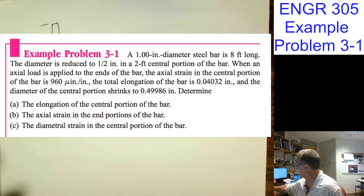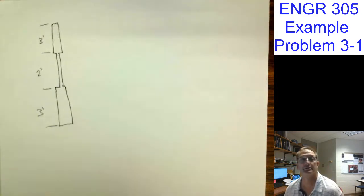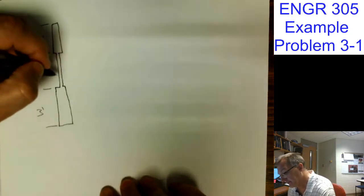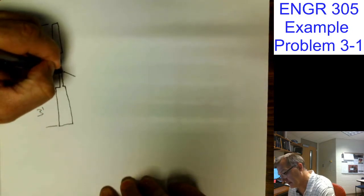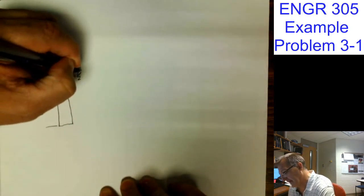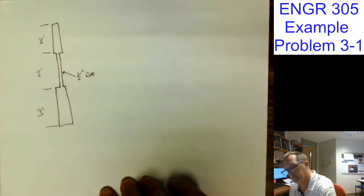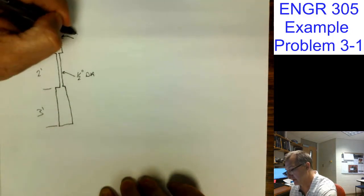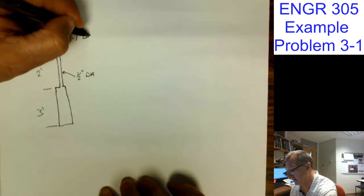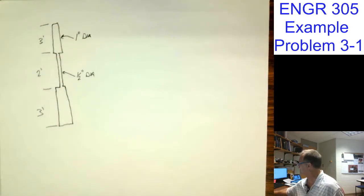Oh, sorry. Turned that off. There's my bar. Three feet, two feet, three feet. The central portion, this is half-inch diameter. This is one-inch diameter. What else do we need to know?